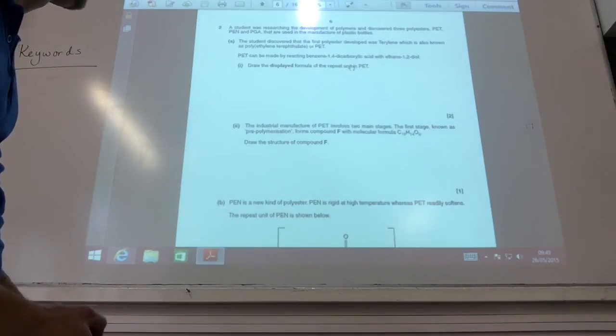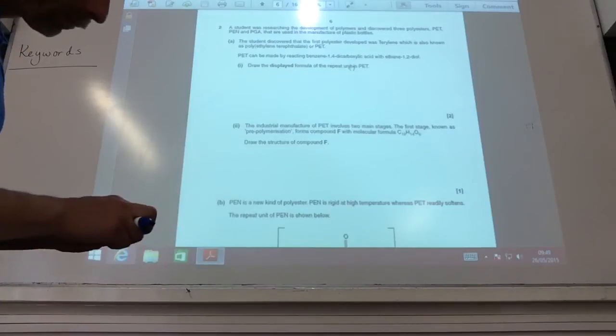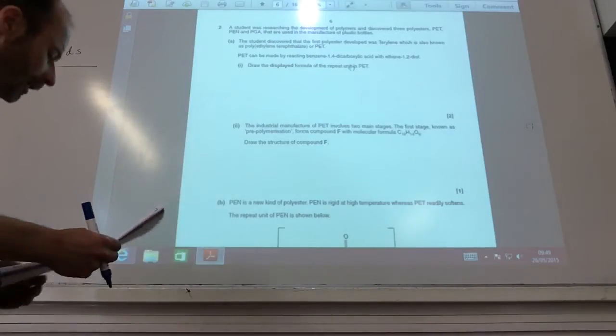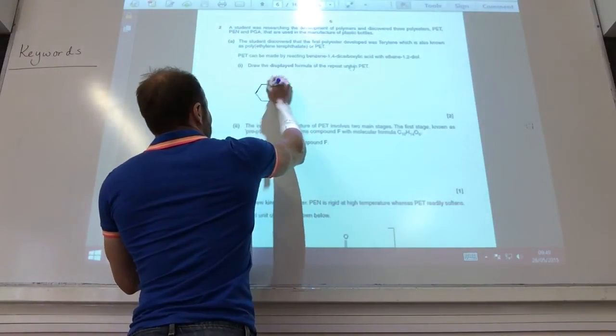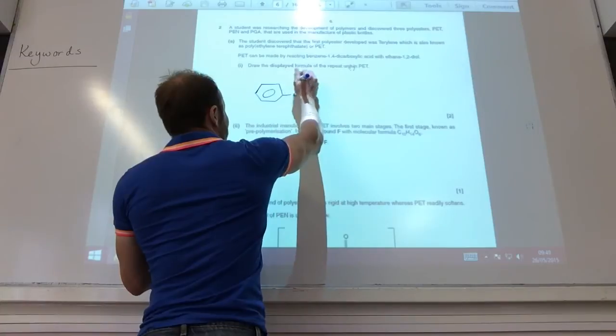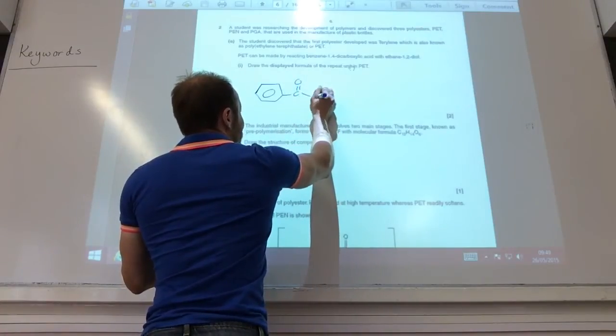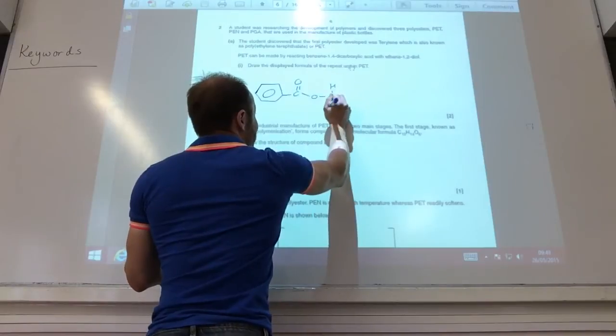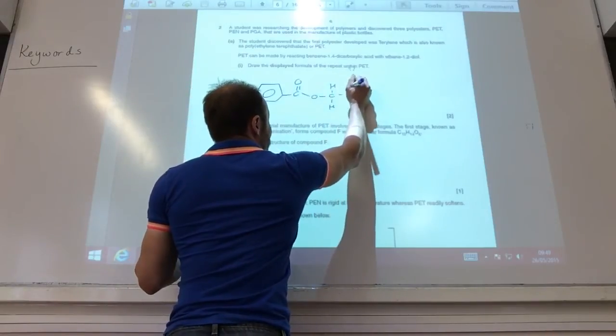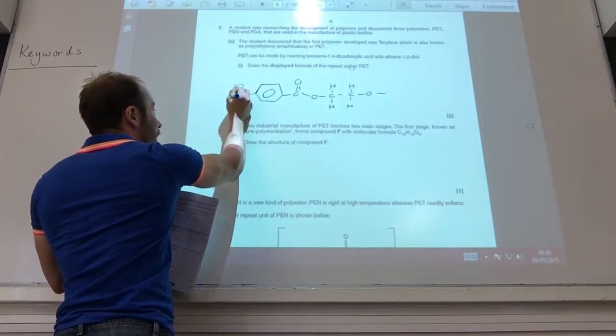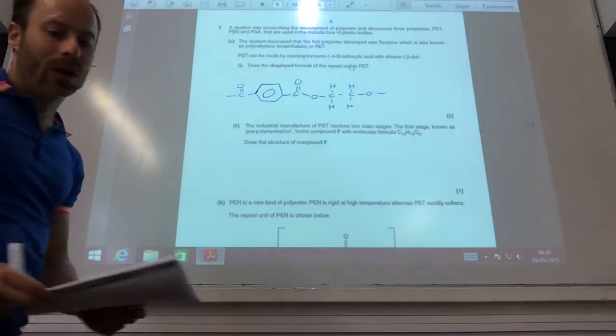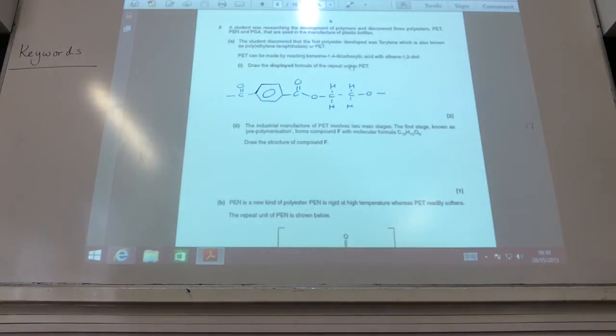Student discovered first polyacetylene, blah blah blah. Benzene 1,4-dicarboxylic acid with ethane diol. Draw a display form for the repeat unit. Okay, so display form for the repeat unit. I'm starting with benzene 1,4-dicarboxylic acid. Rather than that O, I'm going to form the O for ethane diol. That O would go off and it would join up to that one there.